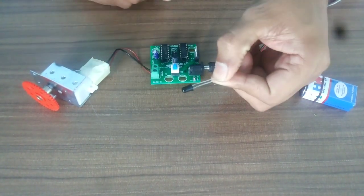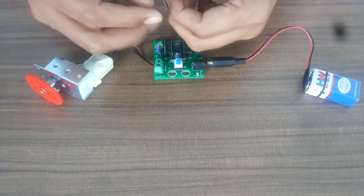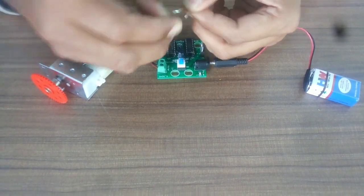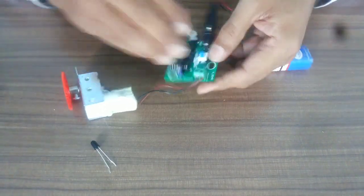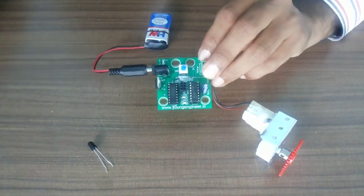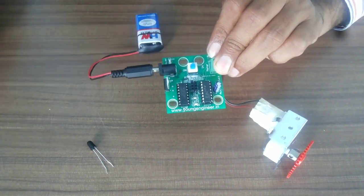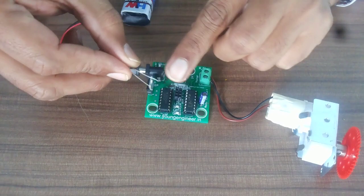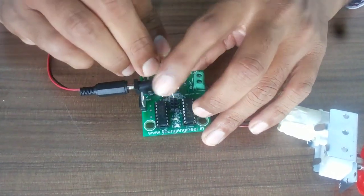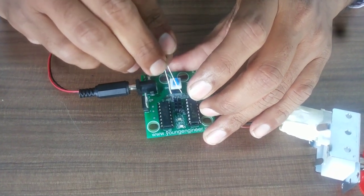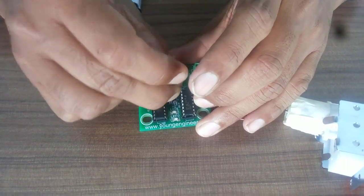Now, we need this IR sensor. The shorter leg is negative and longer leg is positive. Just bend this leg 2 to 3 times and if you see here on this PCB, you will see numbers written 1, 2, 3, 4, 5, 6 like this. You need to put this negative terminal of the IR sensor in socket number 1 and positive in socket number 2 like this.